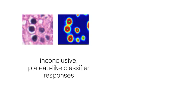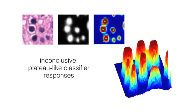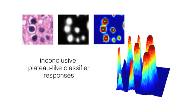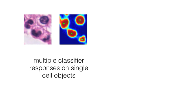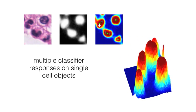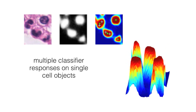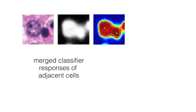Firstly, the cell centers cannot be well localized due to an inconclusive, plateau-like classifier response on the cell nuclei. Secondly, it may lead to multiple peak responses for single objects. And finally, individual adjacent cell objects can be merged if they are too close or their appearance is too similar.